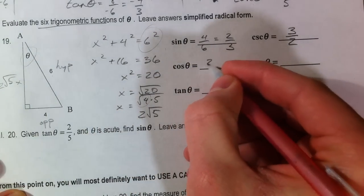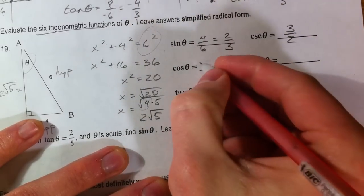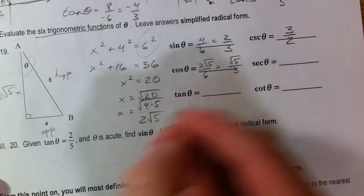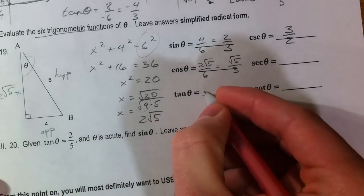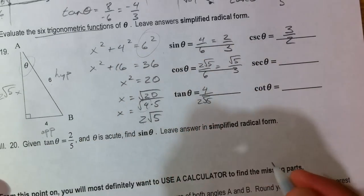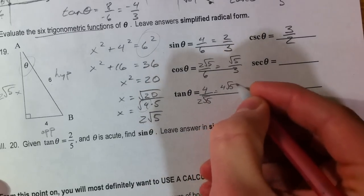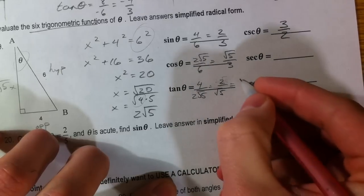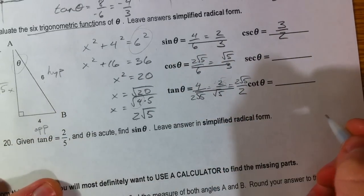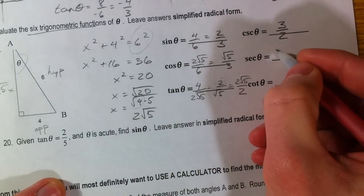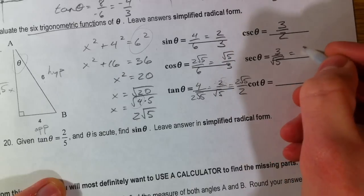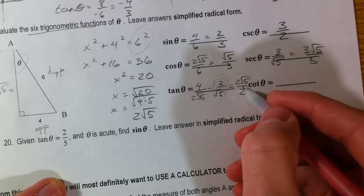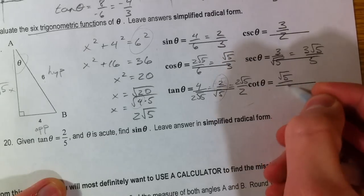So our adjacent over hypotenuse is 2 root 5 over 6, or root 5 over 3 if you take the common factor of 2 out. Tangent is opposite over adjacent. So this is 4 over 2 root 5, or 4 root 5. And actually let's do this. Common factor of 2. So 2 over root 5, or 2 root 5 over 2. I didn't flip over my cosine. 3 over root 5 for the secant, or 3 root 5 over 5. And flipping over this one gives me my cotangent. And so I don't start with my rationalized one because I'd have to rationalize again. And just get root 5 over 2.